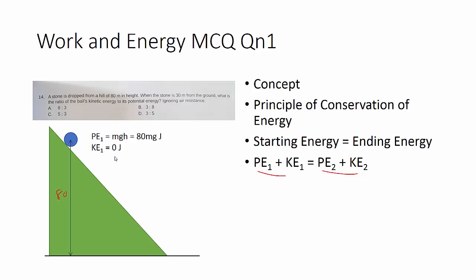And kinetic energy, in this case, is considered zero if the object is at rest. So total energy is just simply 80 plus 0, 80 mg joules.